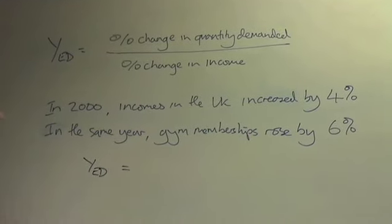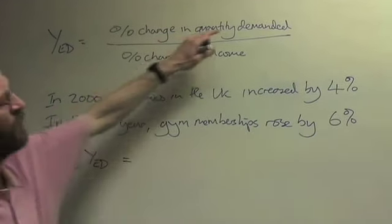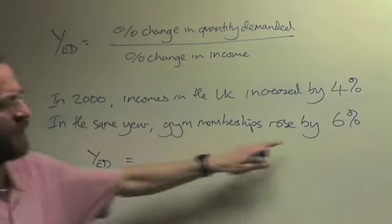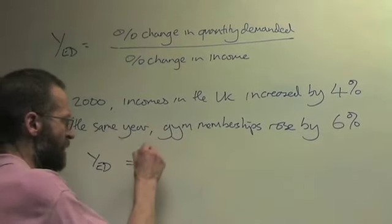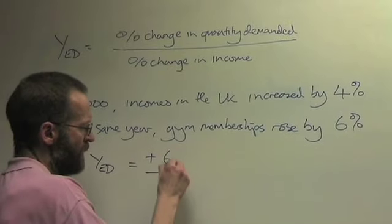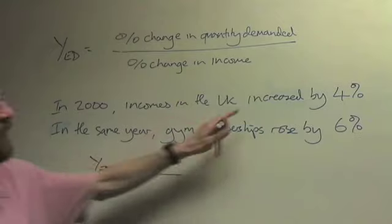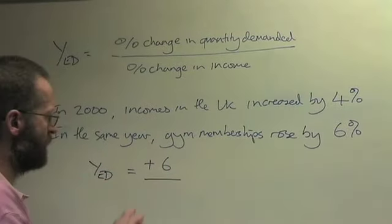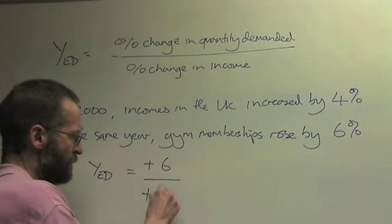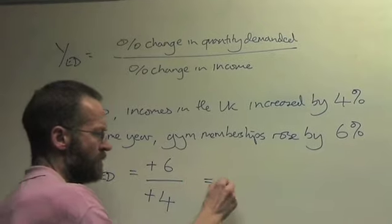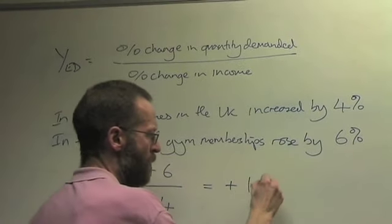The income elasticity of demand will be the percentage change in quantity demanded, which in this case is 6%, so it's plus 6, divided by the percentage change in income. And we're told that income increased by 4%, so that would be plus 4. Work it out. You get plus 1.5.